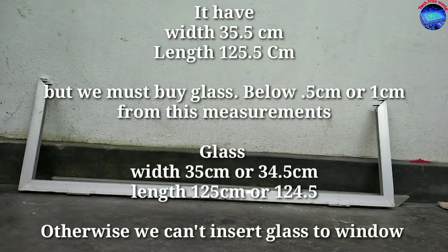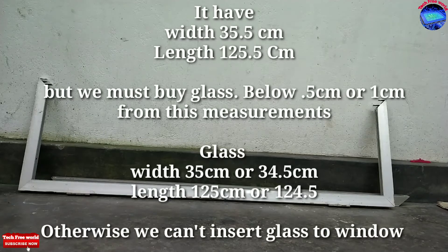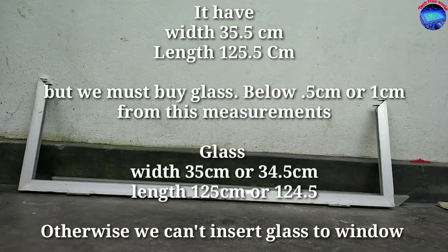But we must buy glass below 0.5 or 1 cm from this measurement. Otherwise, we can't insert the glass into the window track.